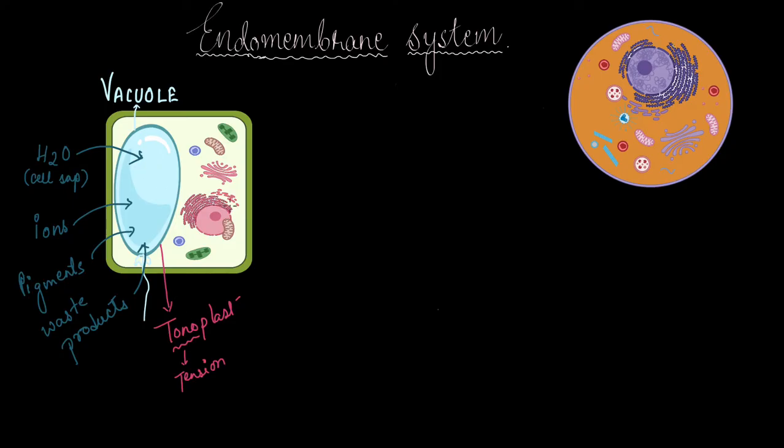So here we saw that the vacuole acts like a storage unit, it provides structural support, and also acts like a recycle bin. Now anything stored in this large vacuole, which is also called the central vacuole in plants, is utilized by the plant cell whenever there is stress or whenever there is unfavorable condition and there is not enough resources for the cells to grow.